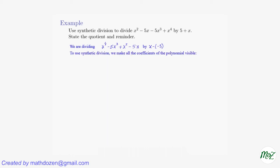And then to use synthetic division, we need to make all the coefficients of the polynomial visible — there could be some zeros. So we have 4th degree, 3rd degree, 2nd, 1st — there is no constant term. We need to put 0 into that place. So we have x to the fourth minus 5x cubed plus x squared minus 5x plus 0. We turn that into just coefficients: 1, negative 5, 1, negative 5, 0. Then we put negative 5 — that comes from the number we subtracted — on the left side. And that's the setup.